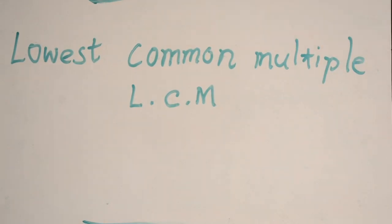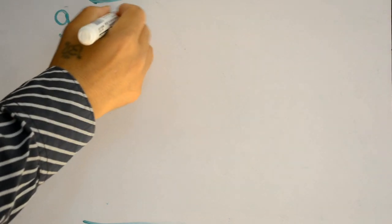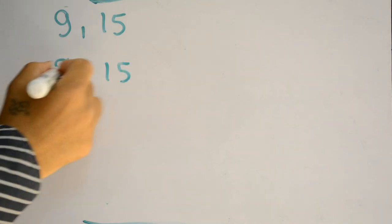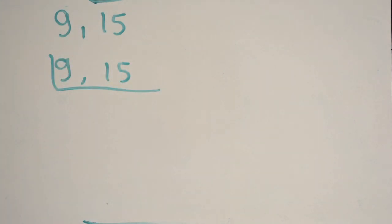Hello friends, today I'm going to show you how to find LCM by the factor-wise method. Let's look at the numbers 9 and 15. Write both numbers together and draw the L symbol. Both are odd numbers, which are not divisible by 2.